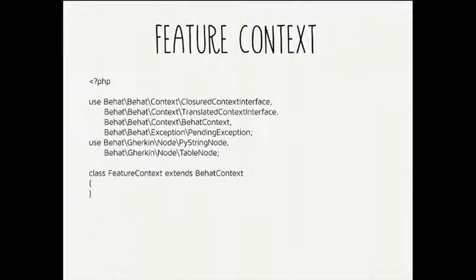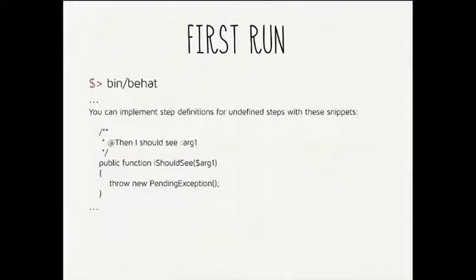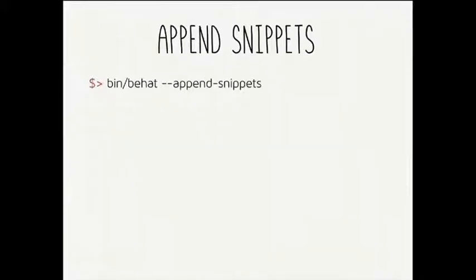What you'll have in addition to your features is a context class that describes how those features should be tested. Behat doesn't make assumptions about what those sentences in human language mean — you need to help it understand what 'given I'm on the homepage' actually means. But the mappings happen through regular expressions or Turnip patterns, and Behat helps you by generating the code. When you run it, it generates all those method mappings as output — you never need to write the regular expressions yourself. You just run Behat with '--append-snippets' and it automatically appends the mapping code to your class.